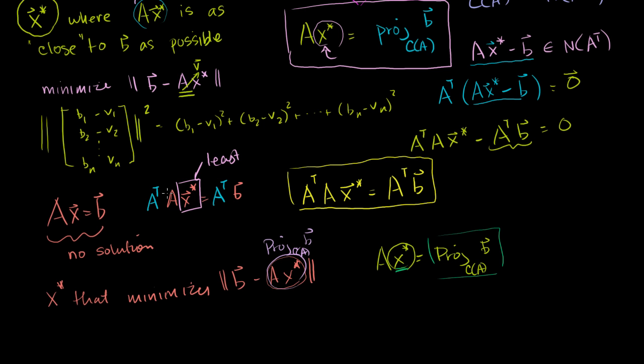Notice this is some matrix times some vector equals some vector. As long as we can find a solution here, we've given our best shot at finding a solution to Ax equal to b — we've minimized the error. The difference between Ax star and b is minimized, giving our least squares solution. It's a little abstract right now, but hopefully in the next video we'll see it's actually a very useful concept.